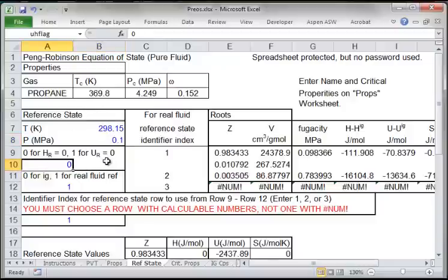This is where I specify whether I want u or h to be zero, and here I specify if I want an ideal gas or real fluid reference state. Then I need to specify the root in the reference state.